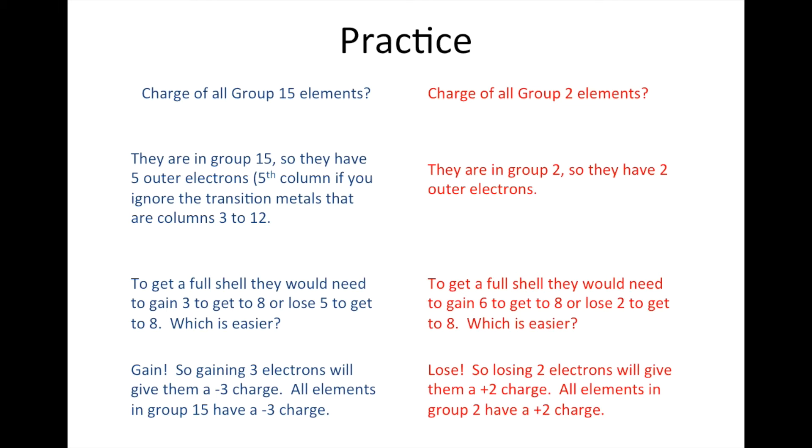If a charge is, what about like group two? Two means they have two outer electrons. So if they have two outer electrons, they're going to get a full outer shell by either gaining six to get to eight because two plus six is eight, or losing two to get to eight, which is easier? Obviously losing. So losing two electrons, they now have more protons than electrons by two. They have a charge of positive two.